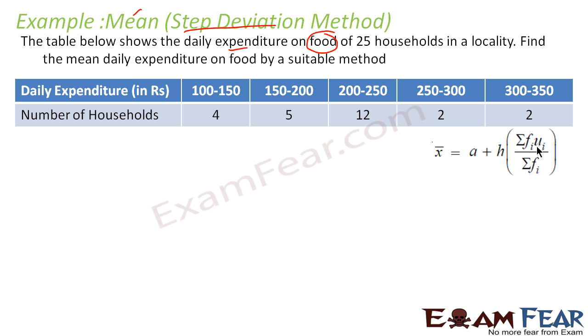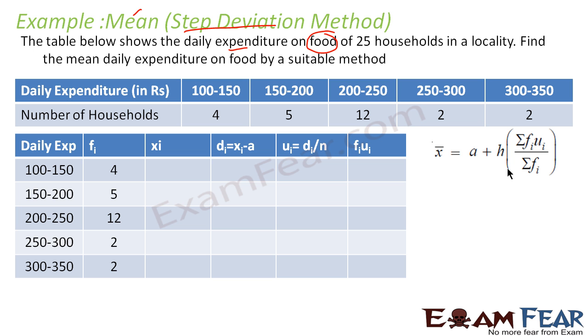So we have this formula: x̄ = a + h × (Σfiui / Σfi). Let's draw this table. Now the first thing to observe is this is grouped data. The lower range is 100, the higher range is 150 for this. For this it is 150. For this the higher range is 200. For this the lower is 200 to 250. Here 250, the higher is 300. Here the lower is 300. Also, the difference if you see is 50. Here also difference is 50, here also 50, here also 50, and here also 50. This is grouped data.